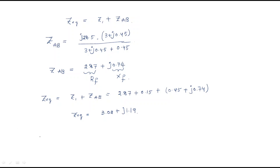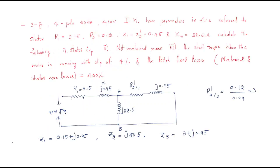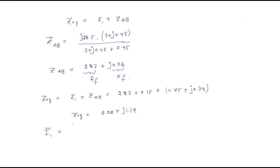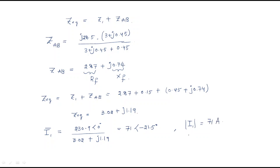From Z_equivalent we find I1: I1 = V1 by Z_equivalent = 230.9 / (3.02 + j1.19). This gives I1 = 71 amperes at an angle of minus 21.5 degrees. So the magnitude of I1 is 71 A and the power factor angle is 21.5 degrees.